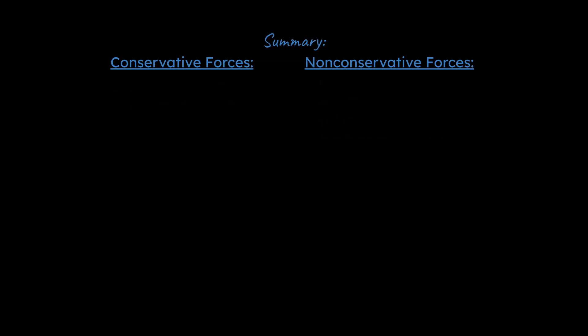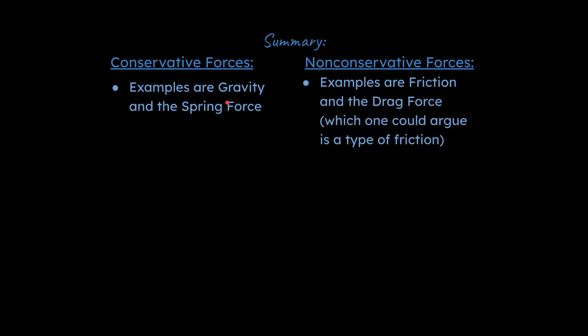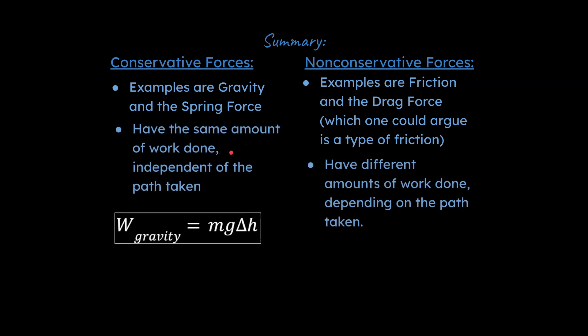All right, so to summarize, we can say conservative forces, two examples would be gravity and the spring force. Non-conservative examples would be friction and the drag force. Next up, we could say they have the same amount of work done independent of the path taken. All you need to know is where is the initial point and where is the final point. And you can do some calculations with the amount of work done with conservative forces. Whereas for non-conservative forces, they have different amounts of work done depending on the path taken. And we came up with this for those two examples, those two first examples I gave you.